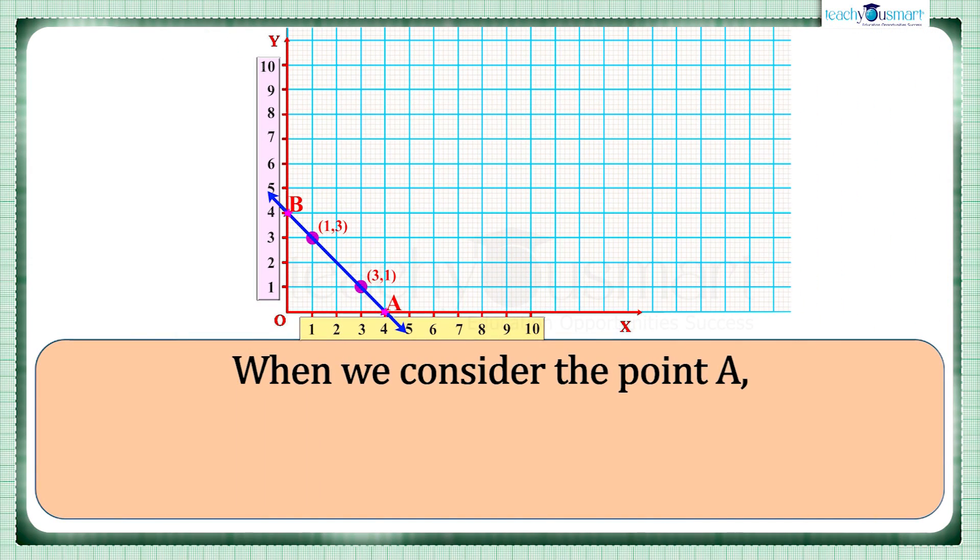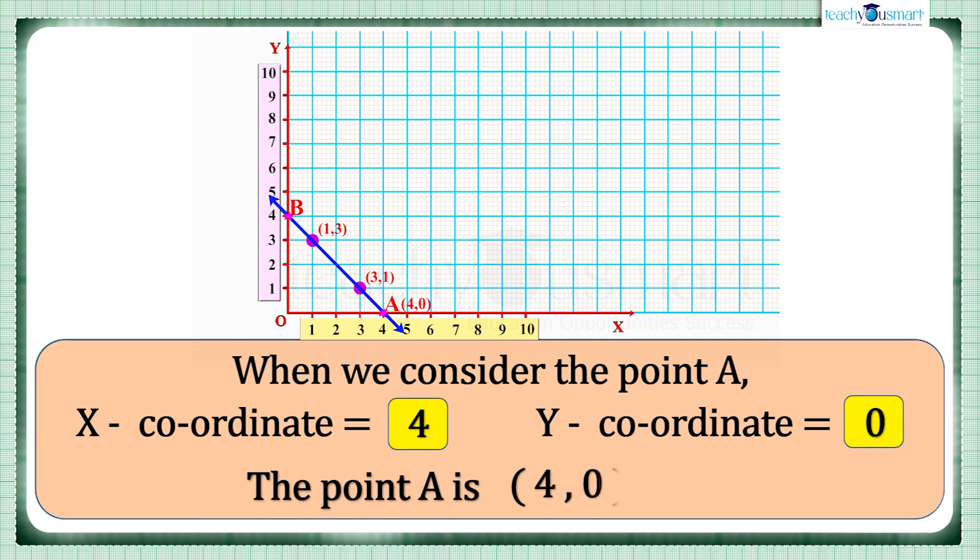When we consider point A, the perpendicular distance from the y-axis to A is 4, that is the x-coordinate. And the y-coordinate is the perpendicular distance from the x-axis. Since the point lies on the x-axis, the y-coordinate is 0. Therefore point A is (4,0).